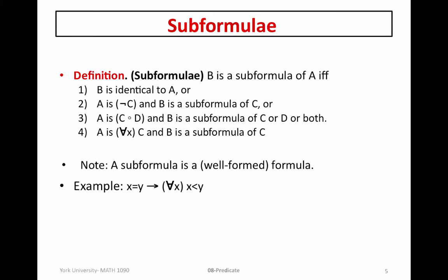Let's look at a particular example. We'll again look at our common well-formed formula example that we've had before: X equal to Y implies for all X, X less than Y. We can see here that X equal to Y is an atomic formula that occurs within this larger formula A. So we know that X equal to Y is a sub-formula, and this comes from combining number 3 and number 1 here.